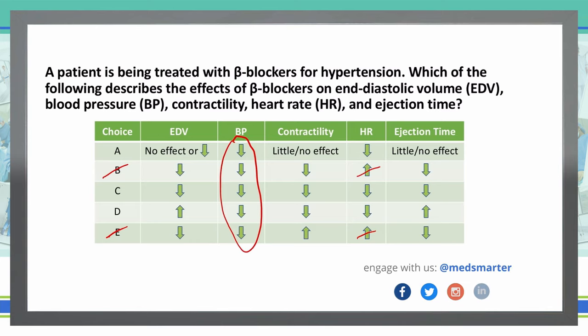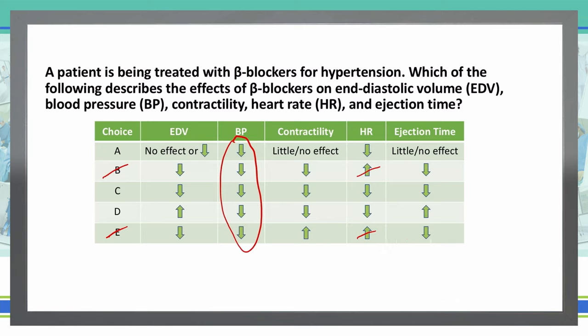If we decrease our heart rate, we're going to decrease oxygen consumption, and that will also decrease our contractility. Therefore, we can rule out anything that has an increase in contractility or little to no effect — that is E and A. So now we're down to C and D.